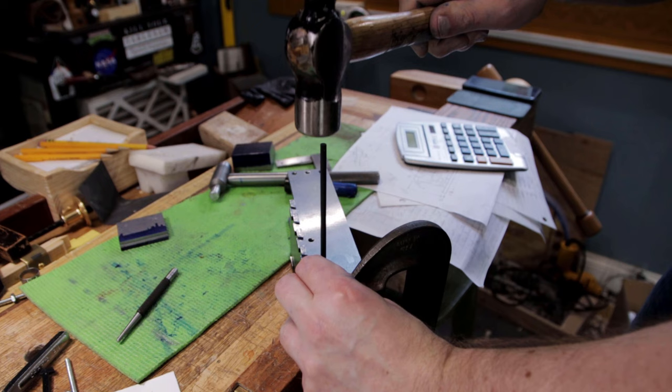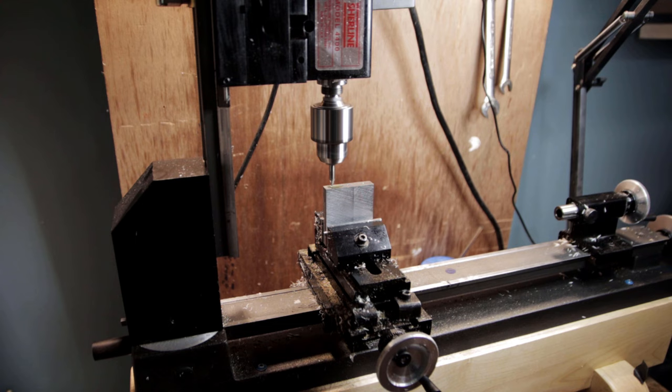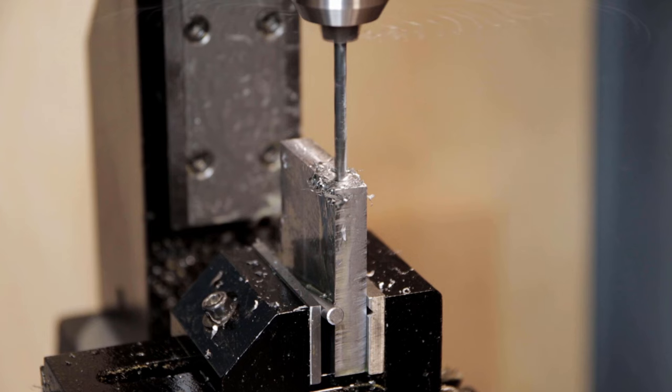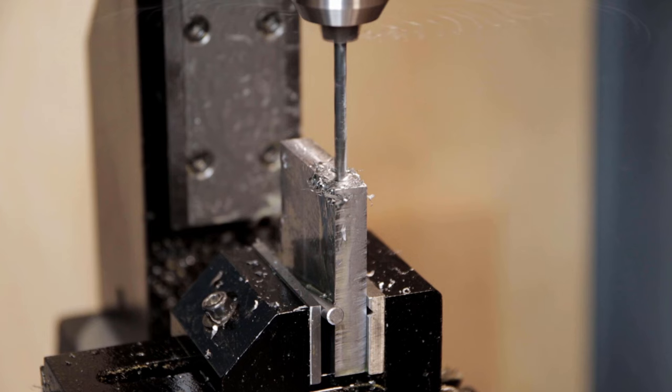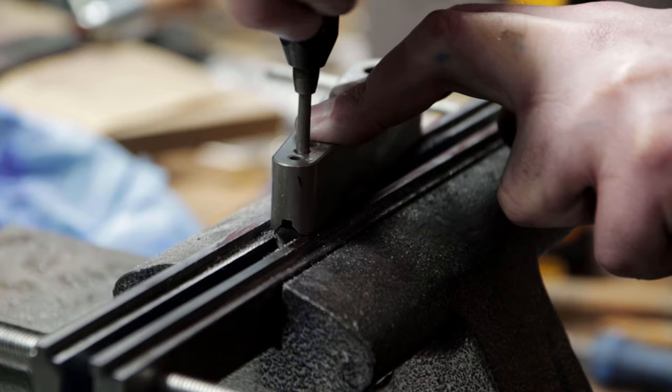Now I'm using a transfer punch to transfer the holes I drilled earlier to the front. Those are getting center drilled then drilled. I'm doing that over on the lathe so I can have some pretty accurate measurements. And now they're all getting tapped and just held in temporarily.